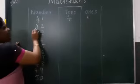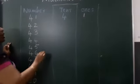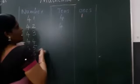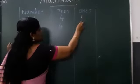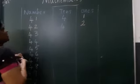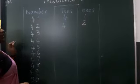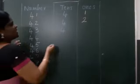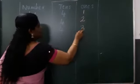Okay, next 4, 2, 42. How many tens? 4 tens. How many ones? 2 ones. 4, 3, 43. How many tens? Yes, 4 tens and 3 ones.